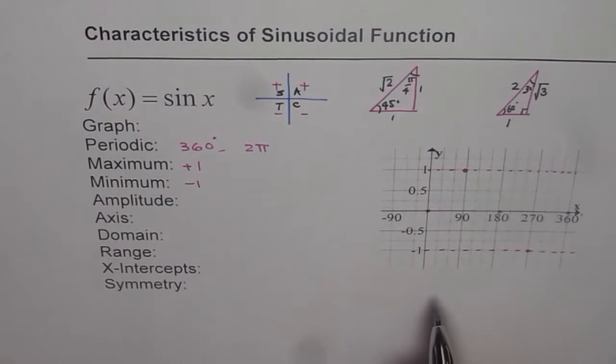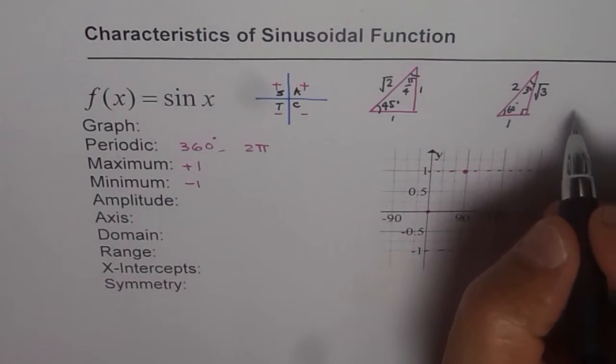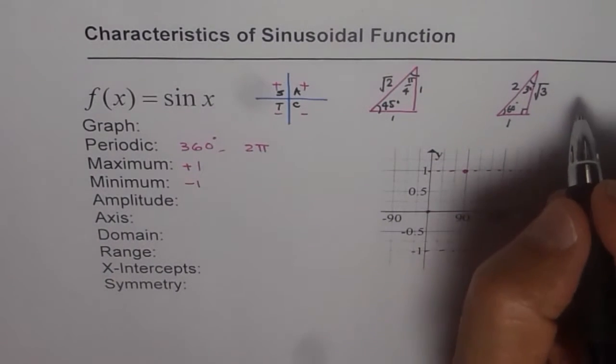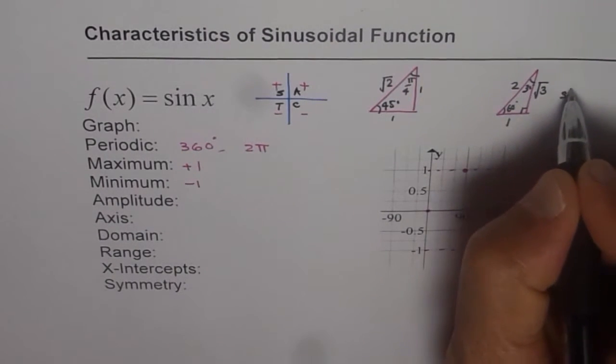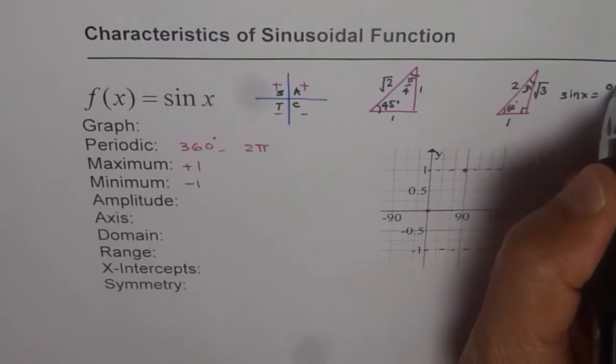So that gives you values of sin theta. And you know what is sin. Sine is opposite over hypotenuse. So we know sin x equals to opposite over hypotenuse.